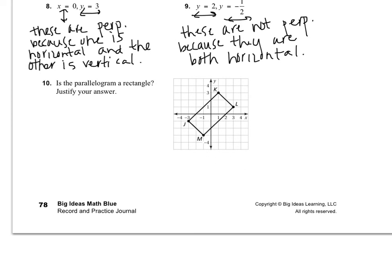In number ten, they ask if something is a rectangle. The mathematical reason that makes something a rectangle is not that it has four sides — it's that it has 90-degree angles. What makes 90-degree angles is that the sides are perpendicular. So we calculate the slopes of each side and see if adjacent sides have negative reciprocal slopes.